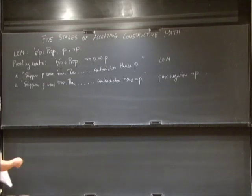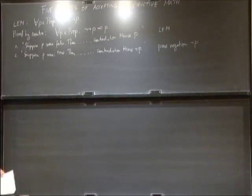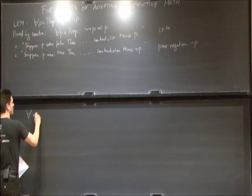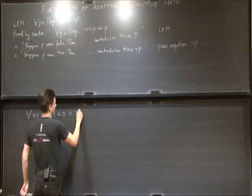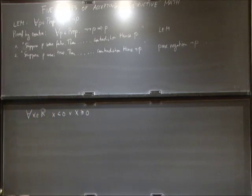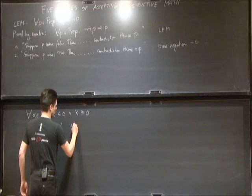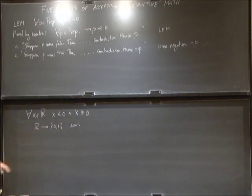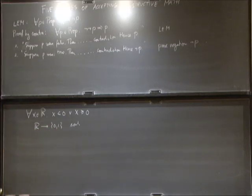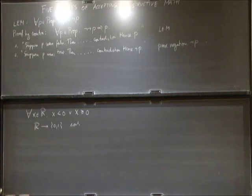Under this topological reading, consider the statement: for all x in ℝ, x < 0 or x > 0. For this to hold, it would give us a continuous map from ℝ to {0,1} telling us which possibility holds. But there is no such map — you can't make this choice continuously because you'd break apart the reals. So this is not going to be OK constructively. On the other hand, 'every natural number is less than 7 or greater than or equal to 7' is fine, both computationally and topologically, because the natural numbers have a discrete topology.